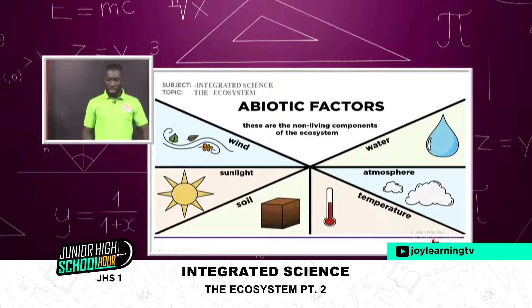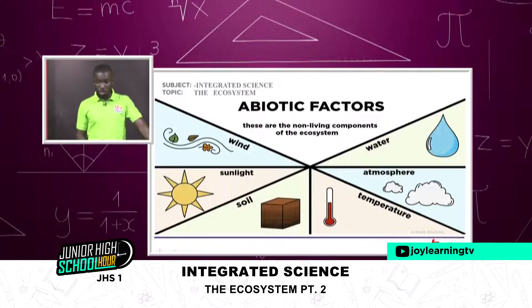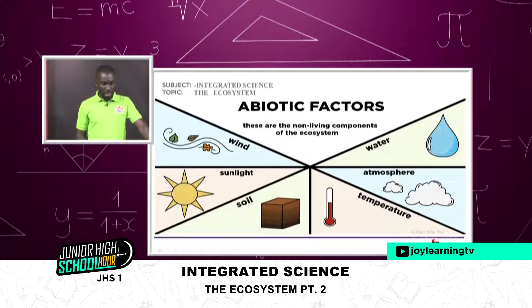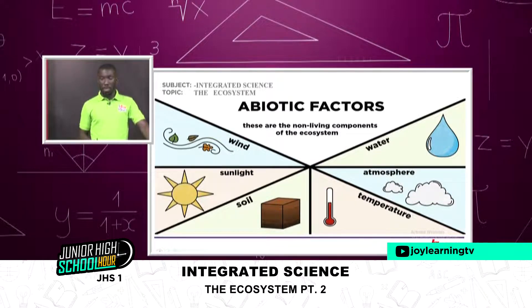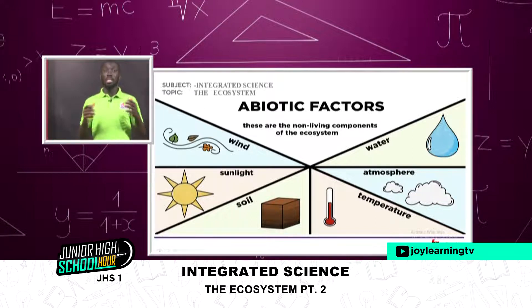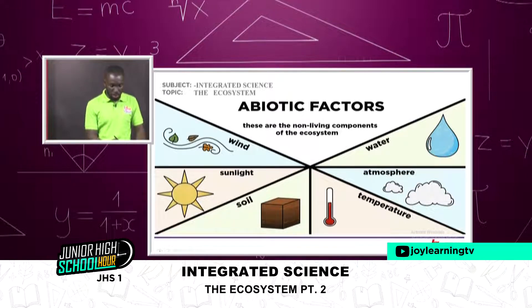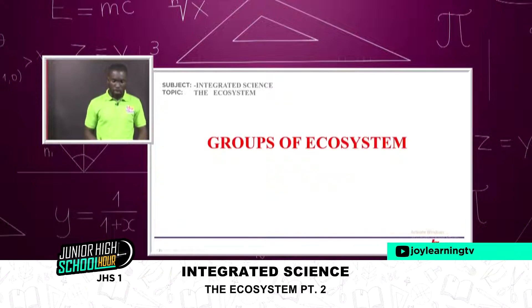So the abiotic factors are the water, the wind, the sunlight, soil, temperature, and atmosphere, which measures the pressure of the atmosphere. All these are the abiotic factors.